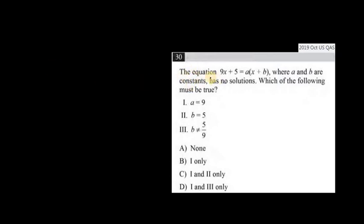So the equation 9x plus 5 is equal to ax plus b, where a and b are constants has no solutions. Which of the following must be true? So before we start to think about these statements, let's just first see what information do we have from the fact that there are no solutions to this equation.